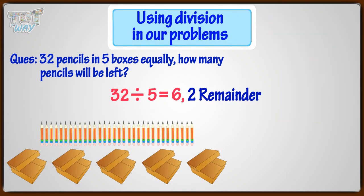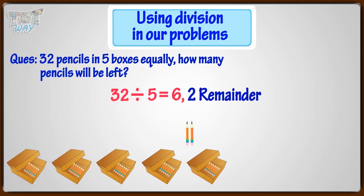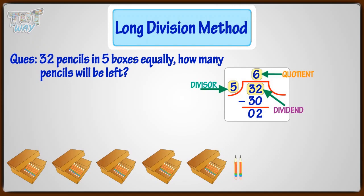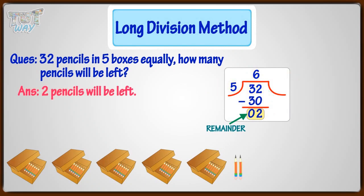That is, dividing 32 pencils into 5 boxes, each box will contain 6 pencils. A remainder of 2 means 2 pencils will be left. You can also use the long division method. Where 32 is our dividend, divisor is 5, and quotient is 6 — that is, each box will contain 6 pencils. Remainder is 2, that is, 2 pencils will be left. What we need here is the remainder, which is 2. So there will be 2 pencils left after division.